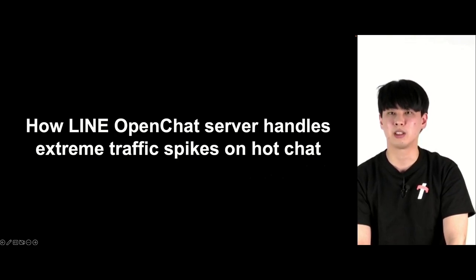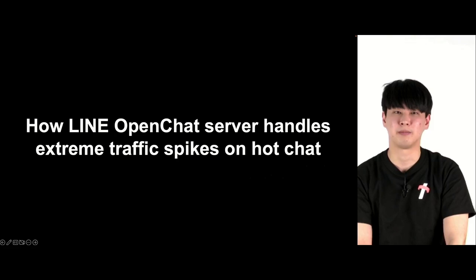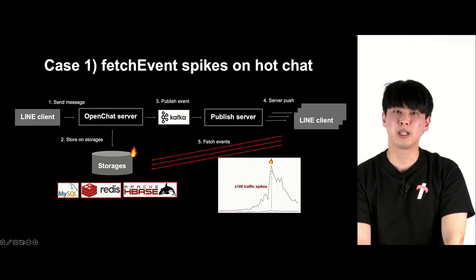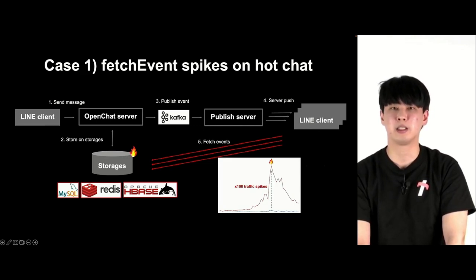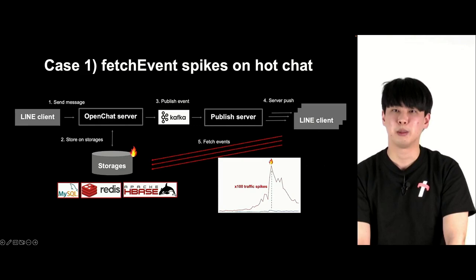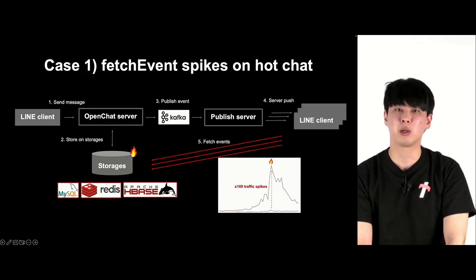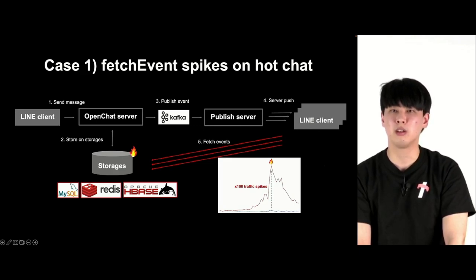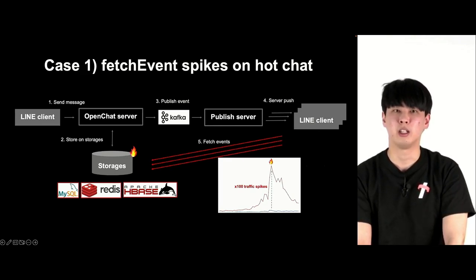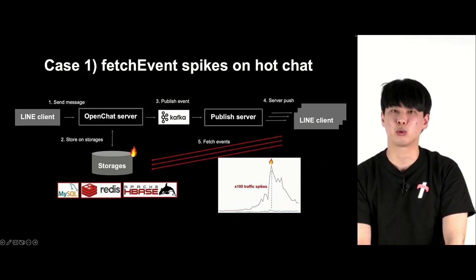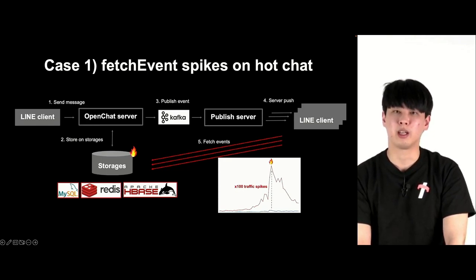The problems we faced will be shared based on different hot chat patterns. The first hot chat pattern is where API requests for fetch events have surged. This diagram shows the structure of our open chat server. When a message is sent, the open chat server stores data in storage and a Kafka event is sent. In a separate server group, Kafka is consumed and server push is sent to users telling them that a new event has been generated. In hot chat, the API requests surge in the fetch events.